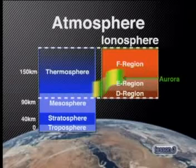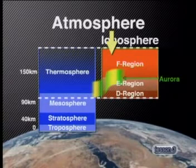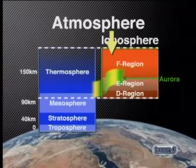Interestingly, the ionosphere is divided into layers not based on the amount of ionization taking place, but on the electron density and types of radiation absorbed in each region. Looking at a diagram, the ionosphere is composed of three main parts: the D, E and F regions.